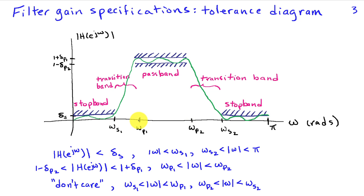So in this band pass filter, the pass band is between omega P1 to omega P2. And in that range, we're saying that the gain of the filter has to be somewhat close to one.